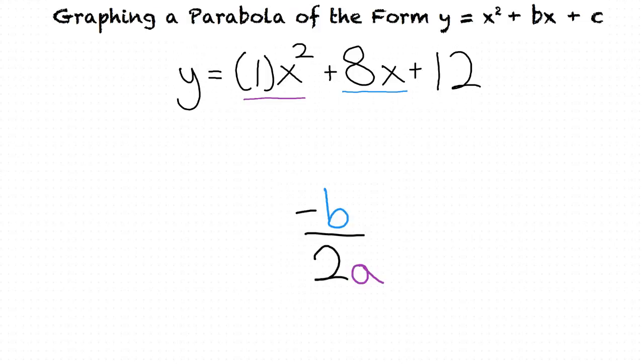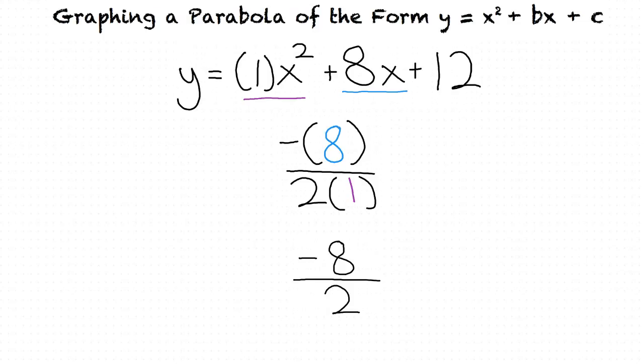In this case, a would equal 1 and b would equal 8. We insert our terms into the formula, which results in negative 8 divided by 2 times 1. From there, we simplify to receive our answer of negative 4. This means that our x value for our vertex is negative 4.